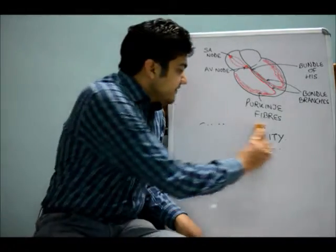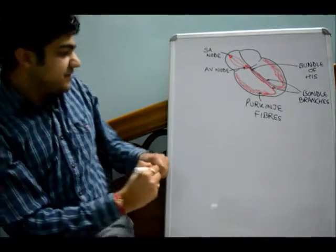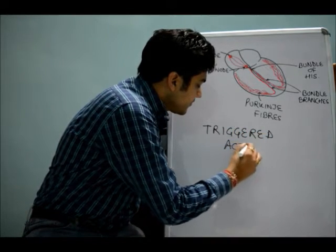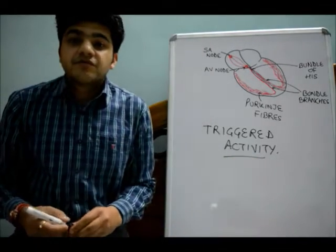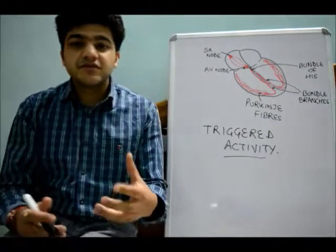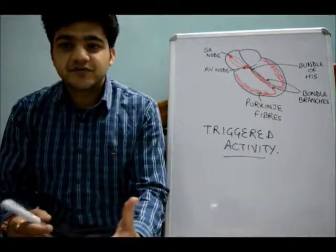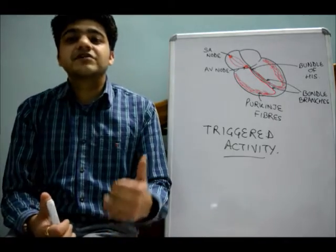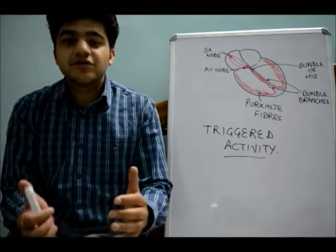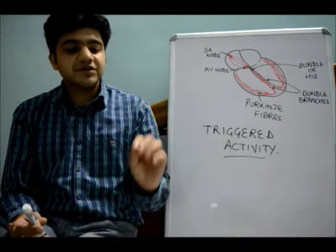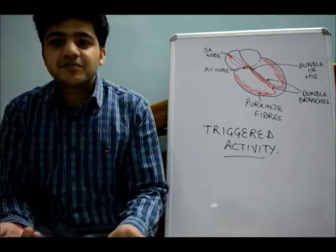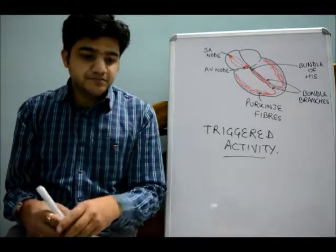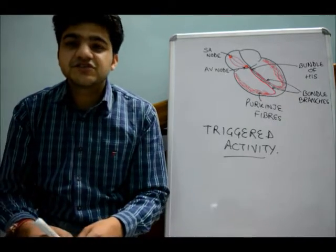The second mechanism is triggered activity. A trigger is something that initiates an event — this activity is not seen if the cell is not stimulated; it occurs only after a normal action potential. It will not happen normally if the cell is not stimulated, but whenever an action potential is generated, something might happen which leads to this triggered activity.